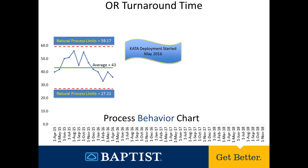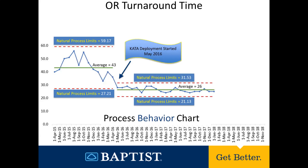In May of 2016, this team started the Improvement Kata. They started running daily experiments, and sometimes even twice a day, against obstacles to their target condition. There were multiple target conditions on their way to their challenge of a turnaround time of 35 minutes. As the pattern of work was altered, you can see the process behavior chart start to give you a signal. That's rule number two of exceptional variation — when eight or more successive values fall on the same side of the central line, that initial solid green line. New patterns of work were being created, and a new norm had been established, so we recalculated the limits, and you can see the new process was now predictable and consistent.